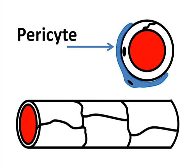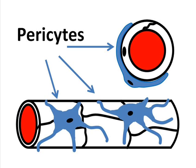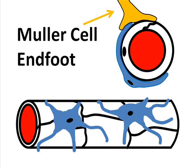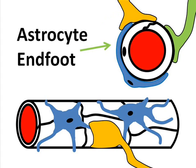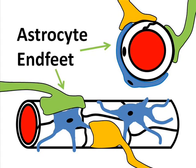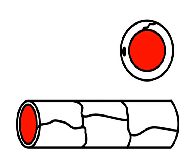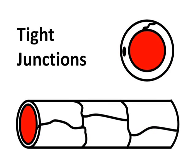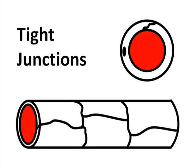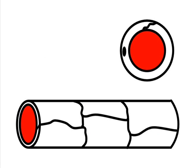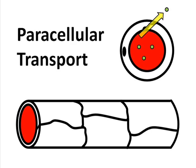These include pericytes, which wrap around the capillary; Müller cells, which surround, protect, and help many of the other cells of the retina; and in the nerve fiber layer, astrocytes, which surround and protect the nerve fibers. In between the endothelial cells and completely surrounding the outer edge of each cell are special proteins which form a connection from one edge of a cell to another. These close connections are called tight junctions. Because of the tight junctions, large molecules like plasma proteins, charged particles like ions, and water are not freely able to enter the retinal tissue by simply slipping in between the edges of the endothelial cells.